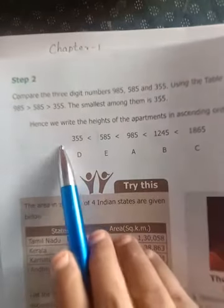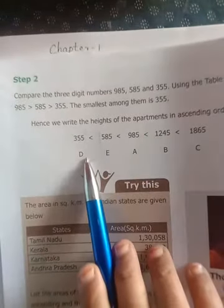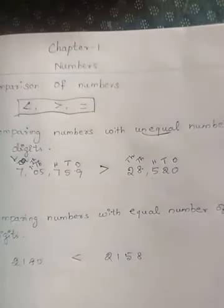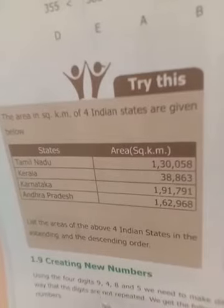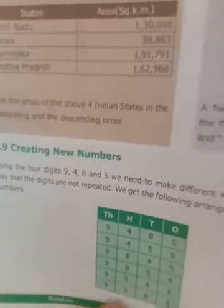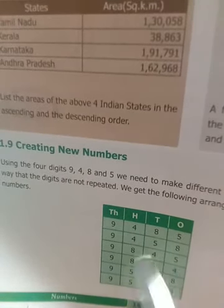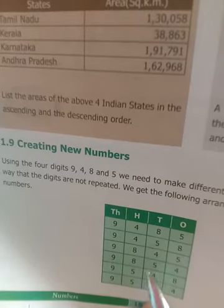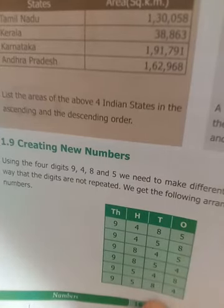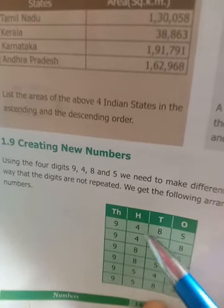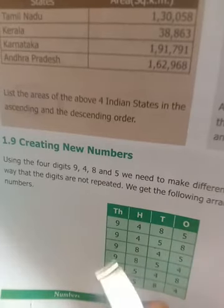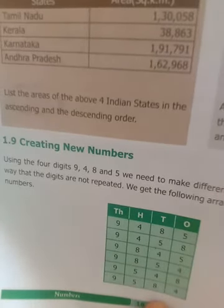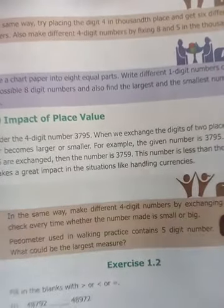The same thing if we are moving to descending order, we will be writing from the big number to small number. Next topic is creating new numbers. They have given some digits: nine, four, eight, and five. We have to make different four-digit numbers. They have arranged these: nine thousand four hundred and eighty five, five thousand eight hundred and forty five, five thousand four hundred and forty eight, eight thousand four hundred - keeping the thousands place and changing the hundreds, tens, and ones.